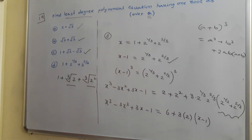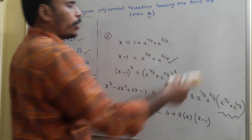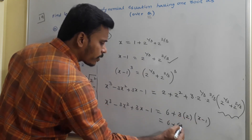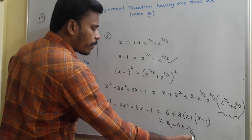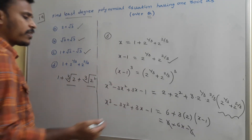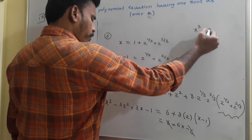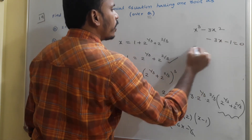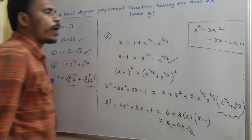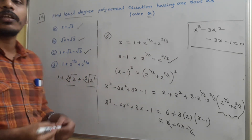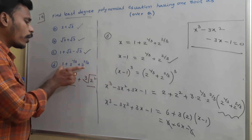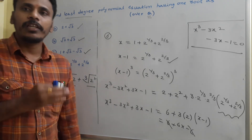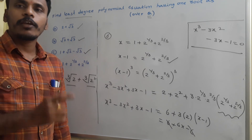Substituting back: x cubed minus 3x squared plus 3x minus 1 equals 6x. Rearranging: x cubed minus 3x squared plus 3x minus 6x minus 1 equals 0, which gives x cubed minus 3x squared minus 3x minus 1 equals 0. This is the required polynomial equation of least degree over rational numbers having one root equal to 1 plus 2^(1/3) plus 2^(2/3). This is the complete method for finding least degree polynomial equations over rationals when one root is known.